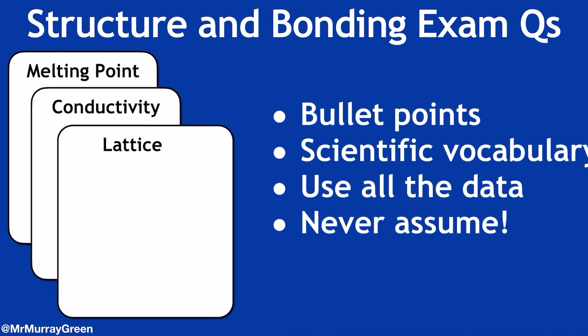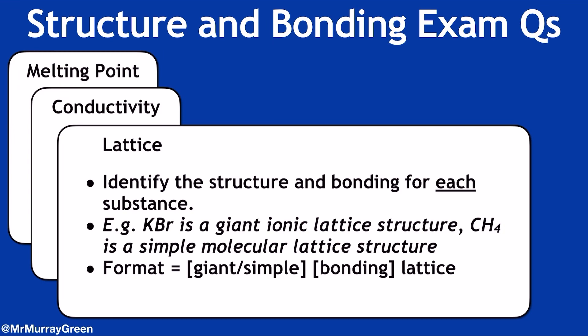So when starting our answer, we're going to kick off by identifying the lattice structure, and we need to use terms here of giant or simple, and then either metallic, ionic, or covalent. Do this for each structure and feel free to group those with the same one to save on some time. But do be very specific and use the correct formulae to describe the substances you're referring to.